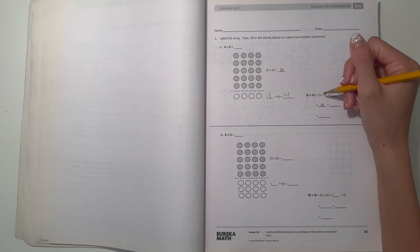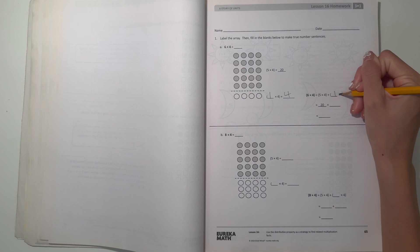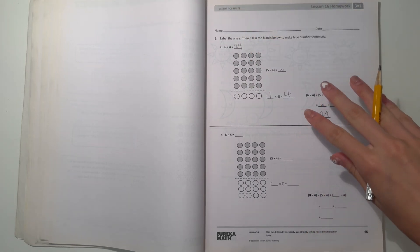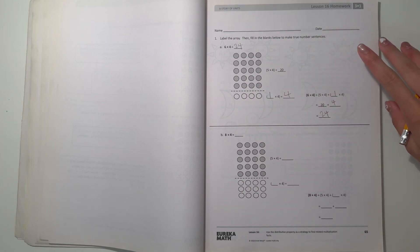So now they have six times four equals five times four plus one times four. Five times four gives us twenty and one times four gives us four, so twenty plus four equals twenty four, which means six times four is twenty four.